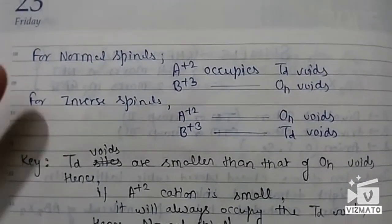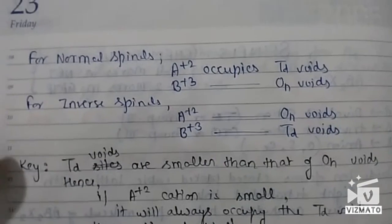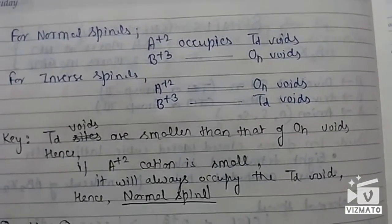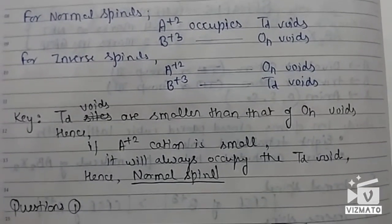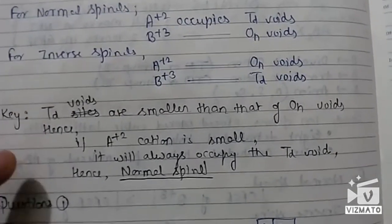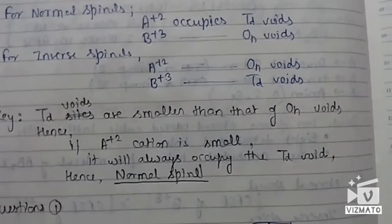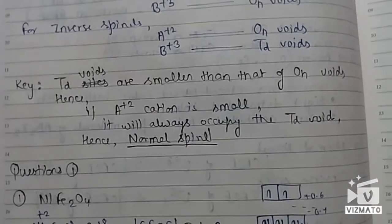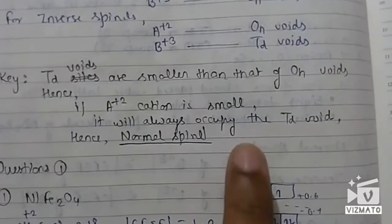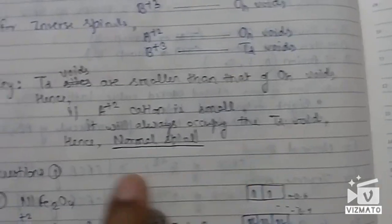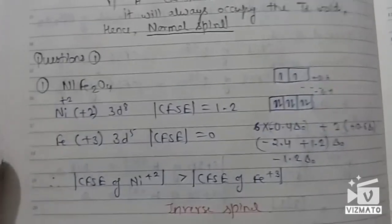For normal spinels, the divalent cation occupies the tetrahedral site and the trivalent cation occupies the octahedral sites. In any close-packed cubic lattice there are eight tetrahedral voids and four octahedral voids, so the tetrahedral voids are smaller than the octahedral voids. If it is a normal spinel, the +2 cation occupies the smaller tetrahedral void.